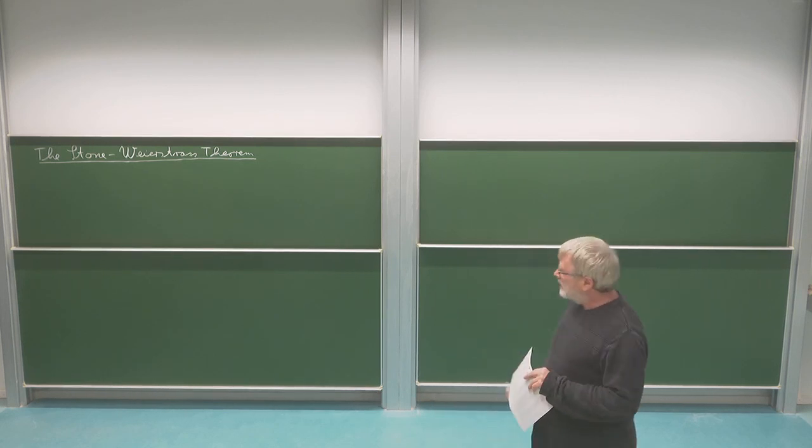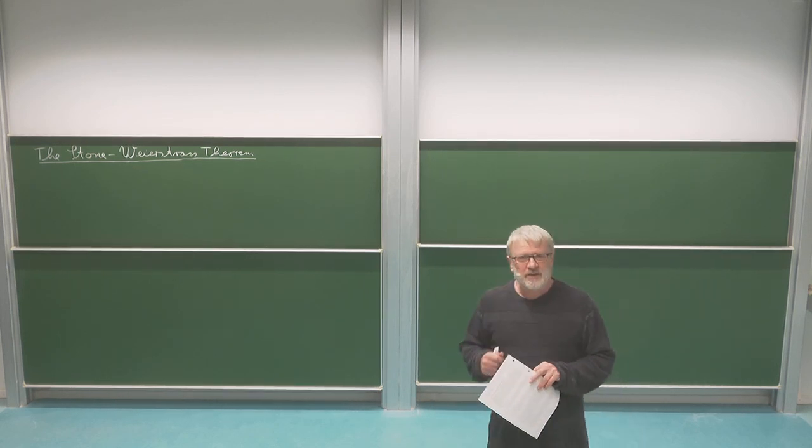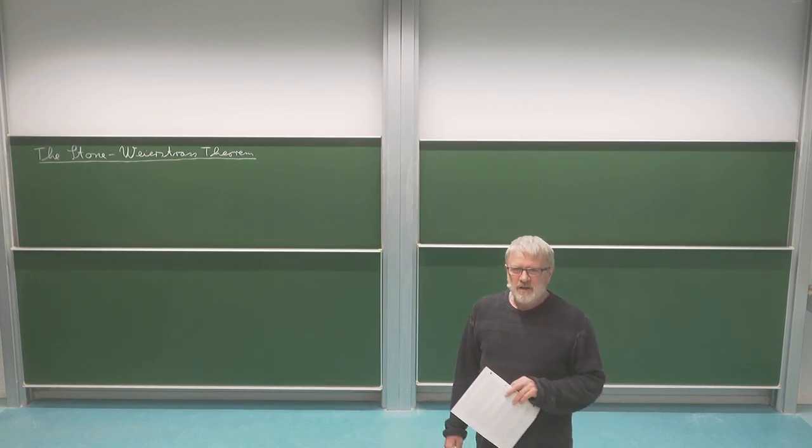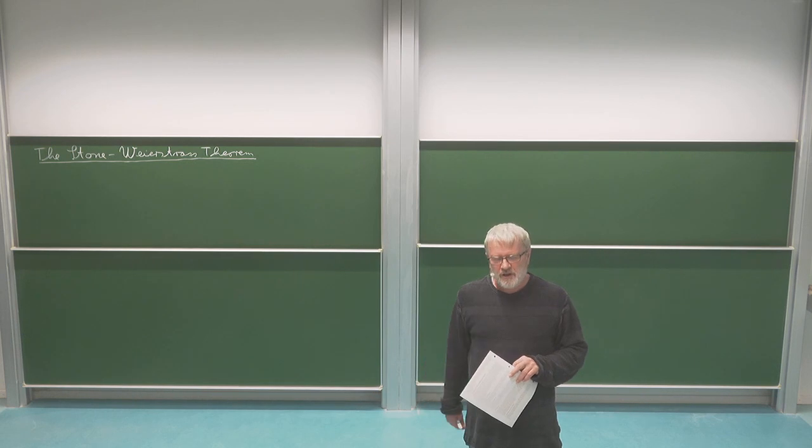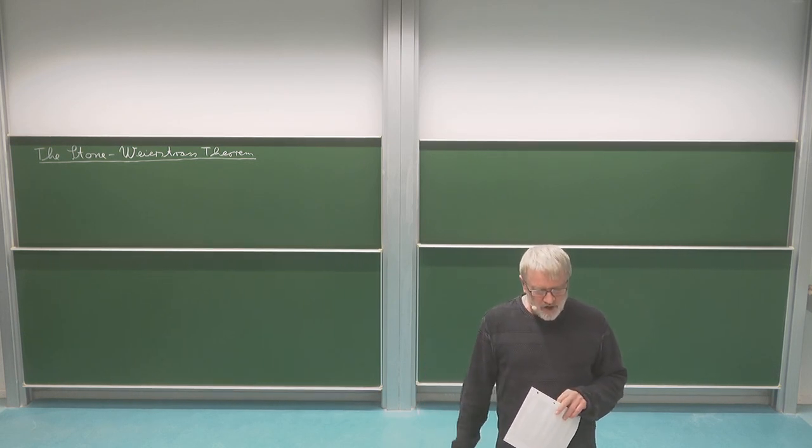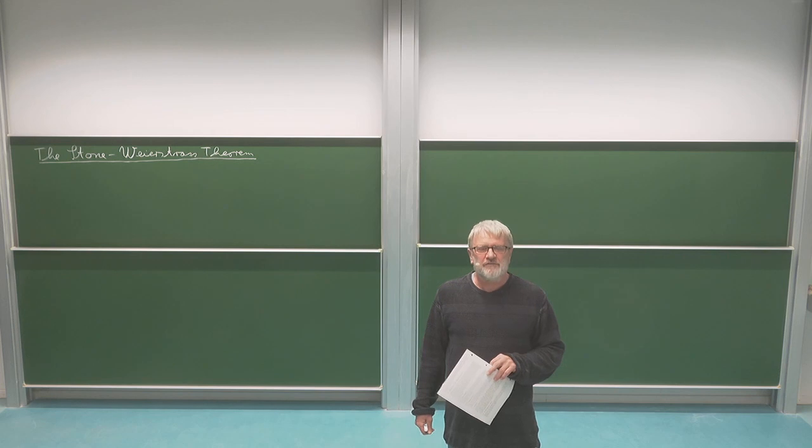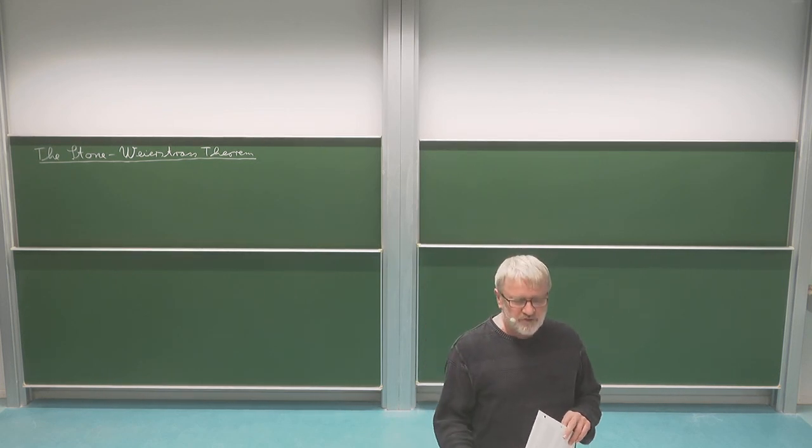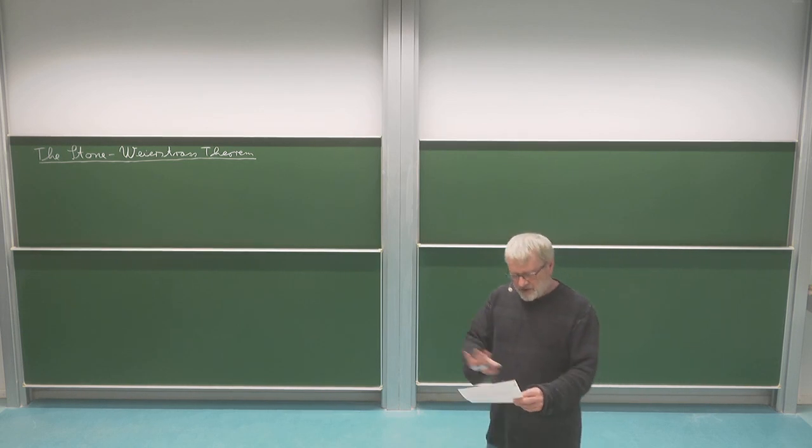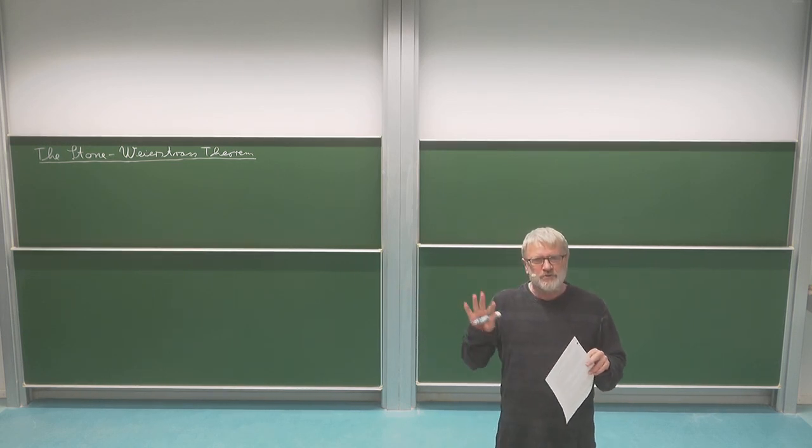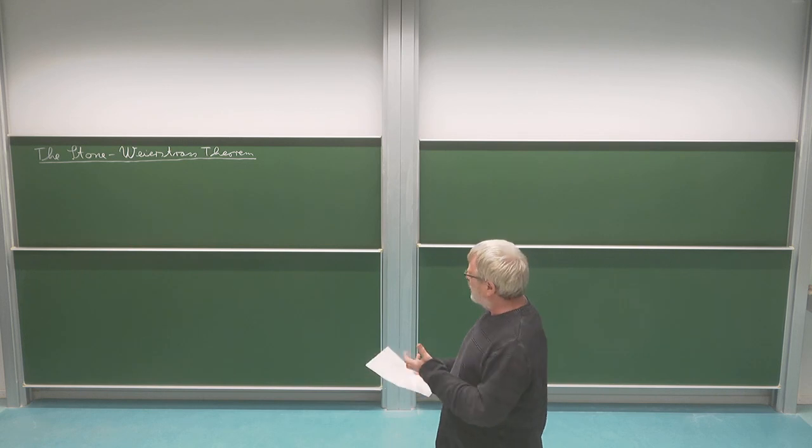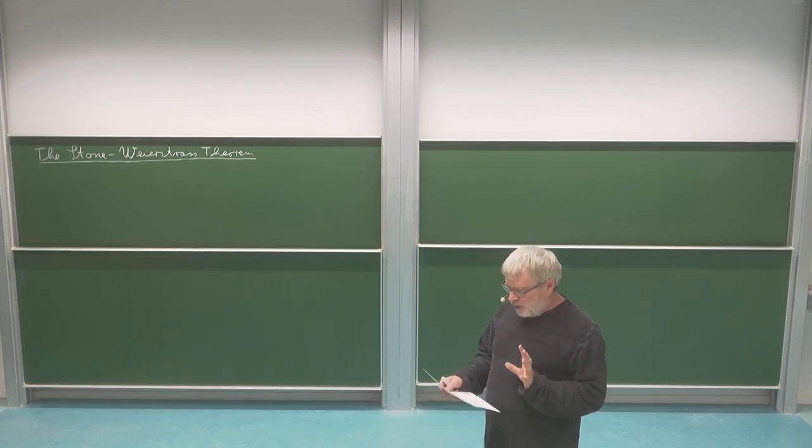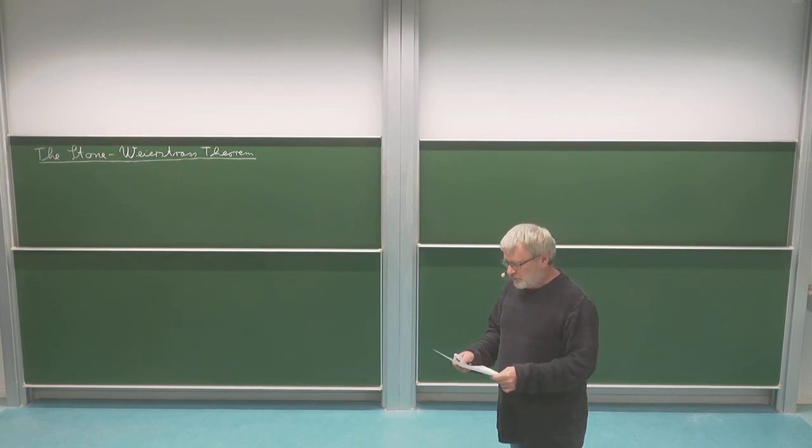Hello and welcome. Today I want to talk about the Stone-Weierstrass theorem. This is a very important general theorem, and for us in particular it will be important as a tool when we are going to prove the Gelfand theorem for commutative C-star algebras. This will be a presentation which is independent of how we use it later, but it's just about the theorem itself, pointing out the main points and the background, and of course giving the proof.